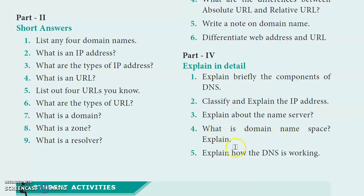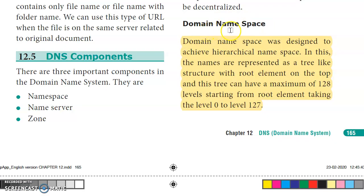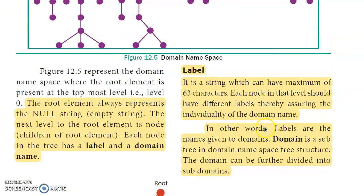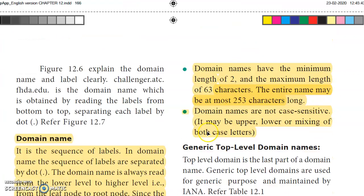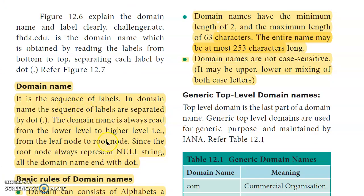Fourth question: What is domain namespace? Domain namespace is designed to draw a hierarchical namespace. It has a tree-like structure. The root element is at the top level, with a maximum of 128 levels. The root element is at level 0. A label is a string of up to 63 characters. Domain name is a sequence of labels separated by dots.